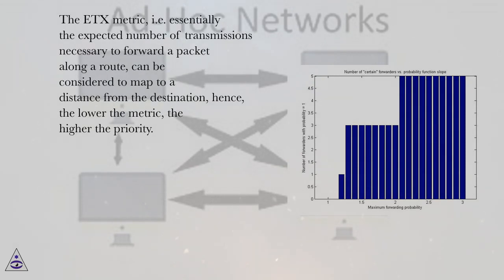The ETX metric, i.e. essentially the expected number of transmissions necessary to forward a packet along a route, can be considered to map to a distance from the destination, hence, the lower the metric, the higher the priority.